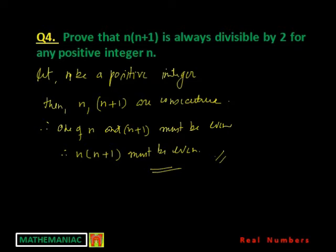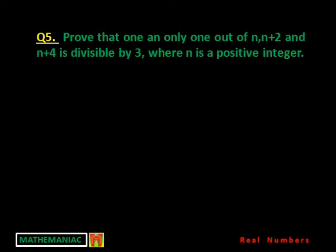Therefore, the product n(n+1) must be even, and if it is even it is divisible by 2. The reasoning is: two numbers are consecutive integers so one will definitely be even, and when you multiply an even number with any integer, the result will always be even. Once the product is even, we can conclude it is always divisible by 2. That's the 2-mark question.